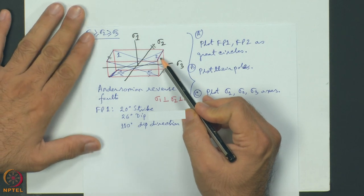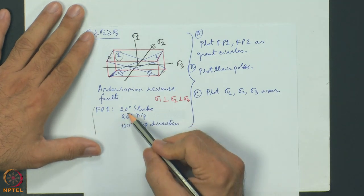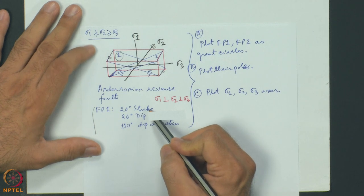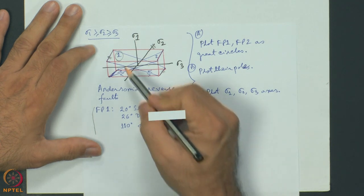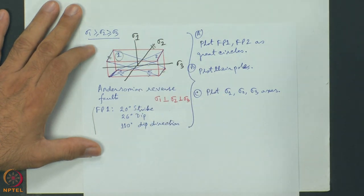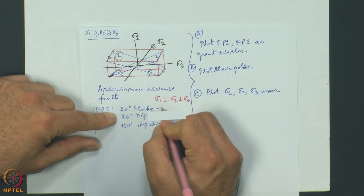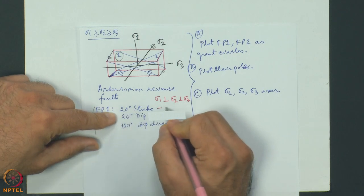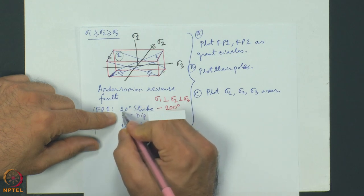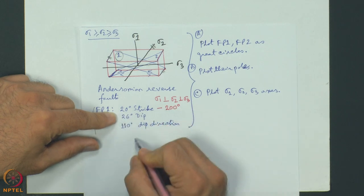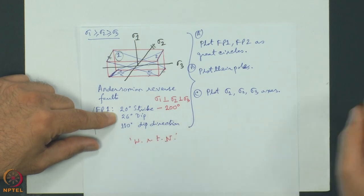Now I will take certain values. For fault plane 1, the attitude data is: 20 degrees is the strike, 26 degrees is the dip amount, and 110 degrees is the dip direction of plane 1. If 20 degrees is one direction of the strike line, the other direction will be 20 degrees plus 180 degrees, which is 200 degrees. These angles are measured with respect to geographic north in a clockwise direction.